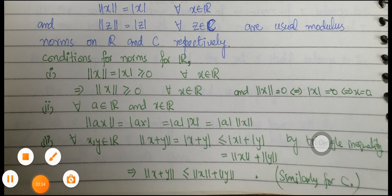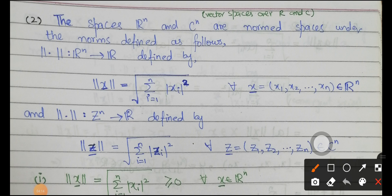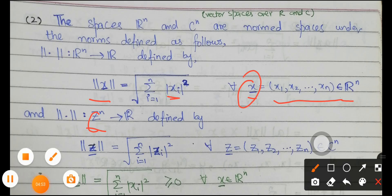Example 2: The spaces ℝⁿ and ℂⁿ — where ℝⁿ represents n-tuples over ℝ and ℂⁿ represents n-tuples over ℂ — are normed spaces under the norm ‖x‖ = √(∑ᵢ₌₁ⁿ |xᵢ|²), where x = (x₁, x₂, …, xₙ) ∈ ℝⁿ. Similarly on ℂⁿ: ‖z‖ = √(∑ᵢ₌₁ⁿ |zᵢ|²) for z = (z₁, z₂, …, zₙ) ∈ ℂⁿ.